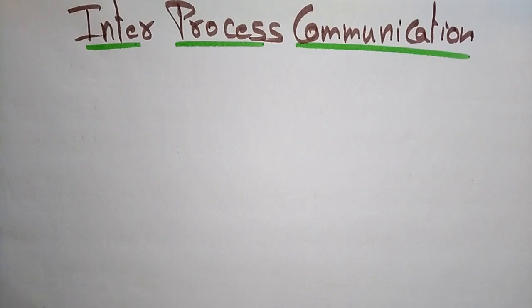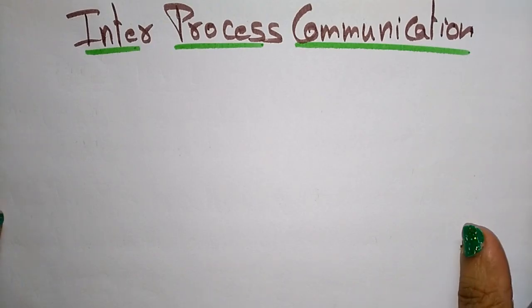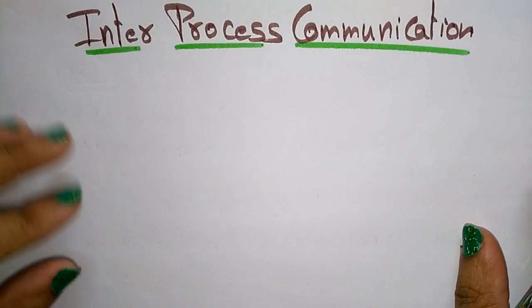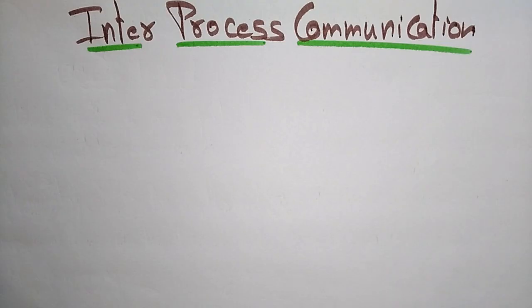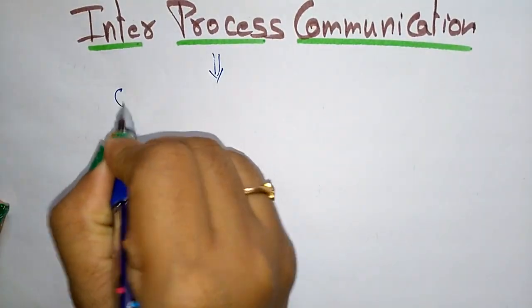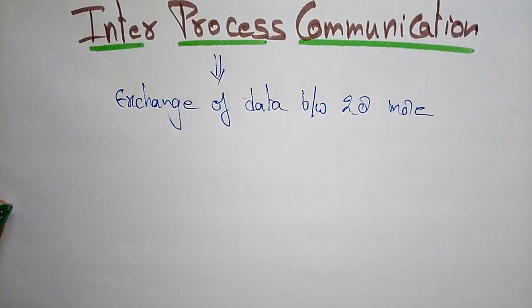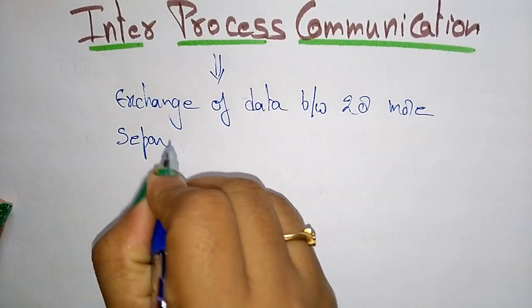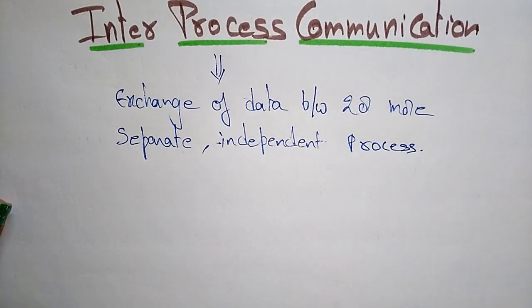Coming to the next topic in operating systems: inter-process communication. I already explained this when dealing with computer organization and architecture, so let me give an overview. A process is a program that has to be executed. Inter-process communication is the exchange of data between two or more separate and independent processes within a system.